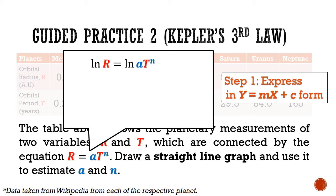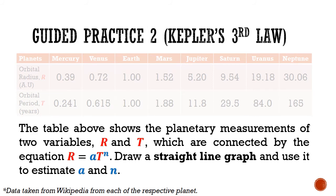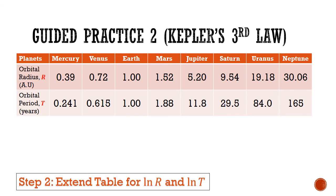Using the product law to split the right-hand side gives ln a plus ln t to the power of n. Applying the power law brings the exponent down as a coefficient, giving ln r equals n ln t plus ln a. So big Y is ln r, big X is ln t, gradient is n, and big Y intercept is ln a. We then extend the table with two additional rows for ln r and ln t.